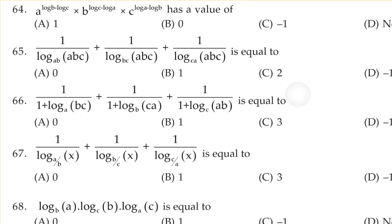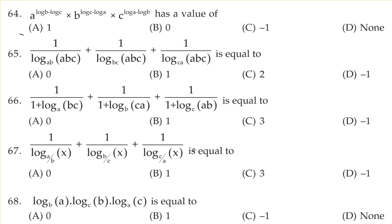Cyclic expressions with a multiplication sign usually give us the answer 1. But remember, never go by trick if you are not sure. For example: a^(log b − log c) × b^(log c − log a) × c^(log a − log b).